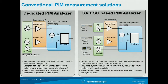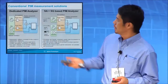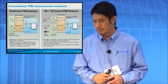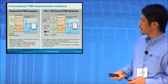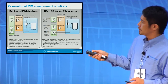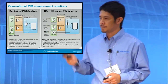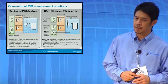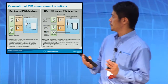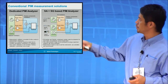Usually the measurement system is a banded solution — we have to have banded passive components and also a PIM power amplifier. For the SA and SG-based system, we have to have two signal generators and also a signal analyzer. And most of the measurement speed of this solution is a problem, because we have to send each frequency individually to the instrument.